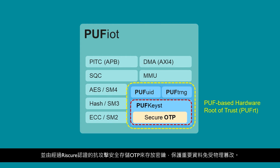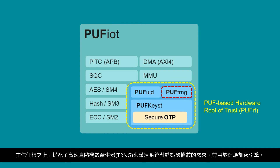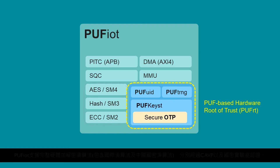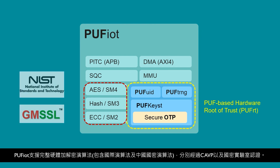Furthermore, Puff IoT offers a RISC-Cure certified anti-tampering secure OTP for key storage, preventing physical or electrical attacks on crucial security parameters. The hardware root of trust also comes with a true random number generator as a source of dynamic entropies to secure cryptographic engines and communications between systems. In addition, Puff IoT supports a complete set of NIST CA-VP certified and third-party certified Chinese OSCCA hardware cryptographic algorithms.